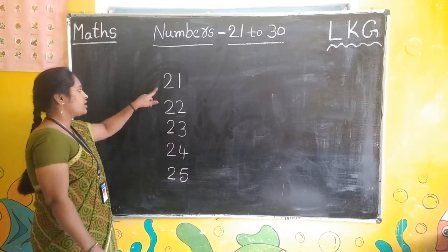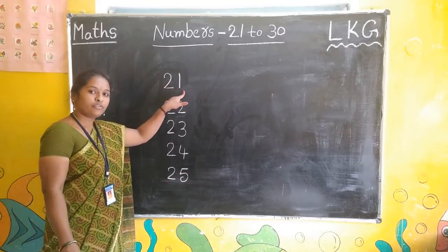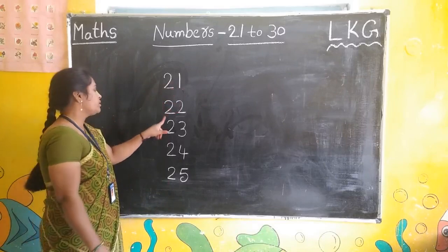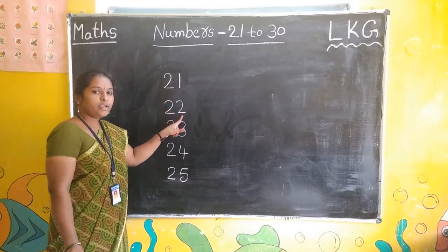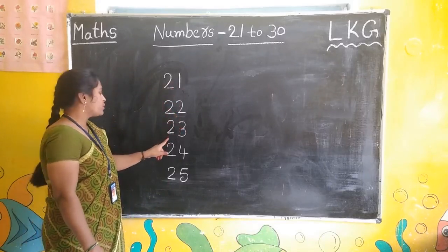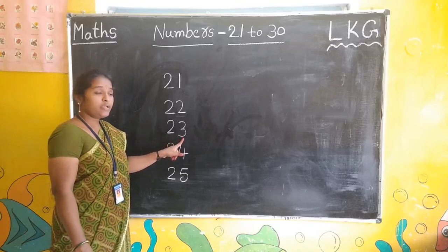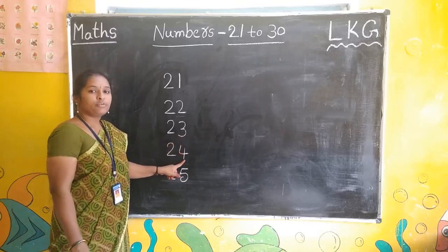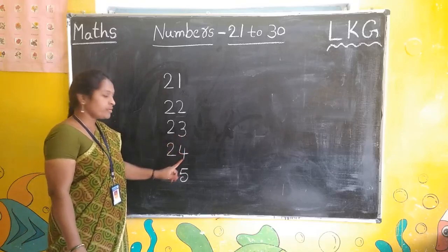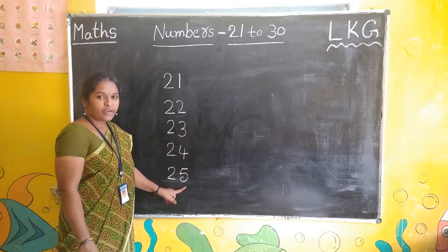Once repeat, children: 21, 22, 23, 24, 25.